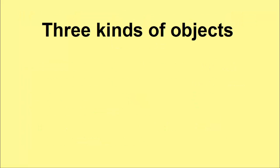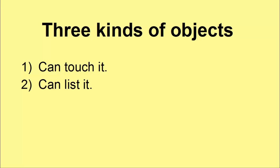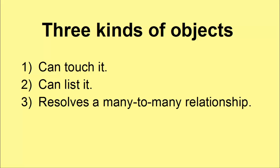So, what is an object? This particular video looks at exactly this problem. An object is something that you can touch — for example, a book. It can also be a list of things, and it can resolve a many-to-many relationship. A good relational database must not have many-to-many relationships, and we're going to get rid of those in our database design.